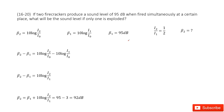We have two firecrackers. When they explode at the same time, they produce a sound level of 95 dB. So we can write that as beta 1. The question asks what the sound level will be if just one firecracker explodes.